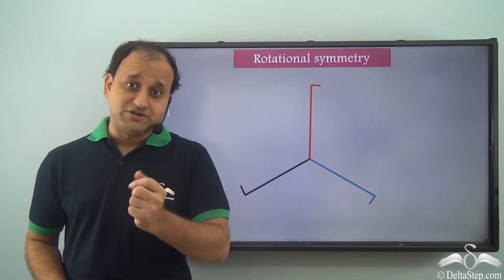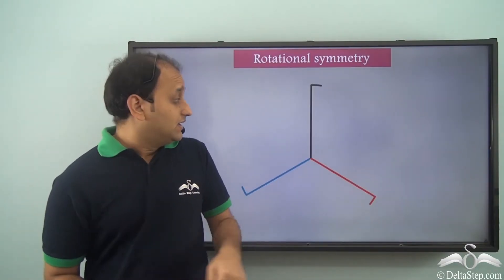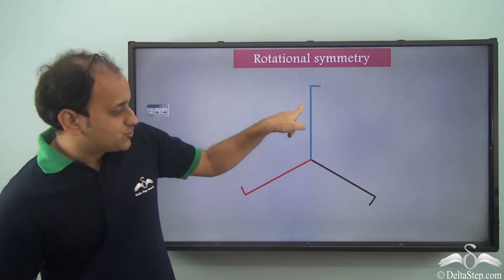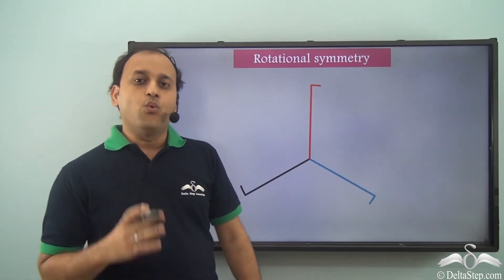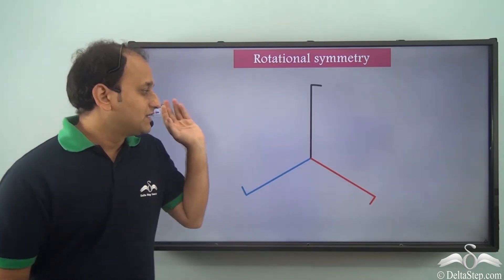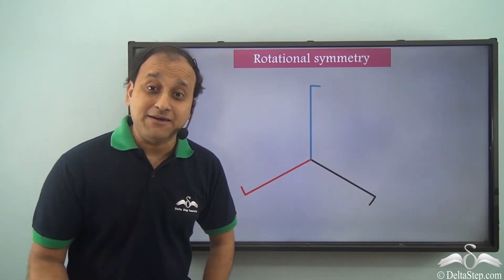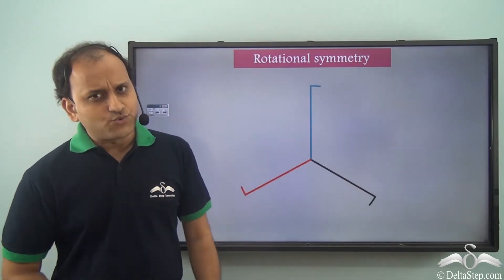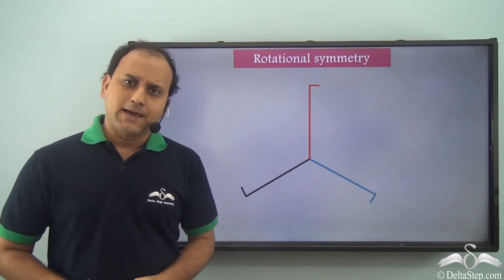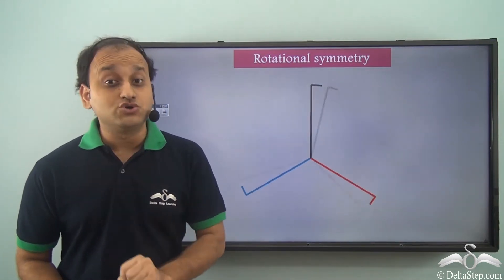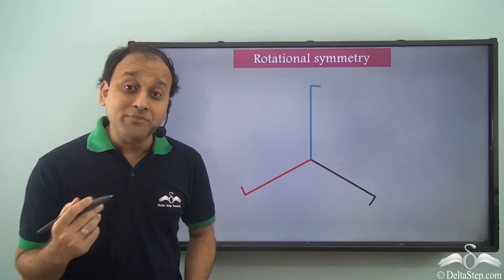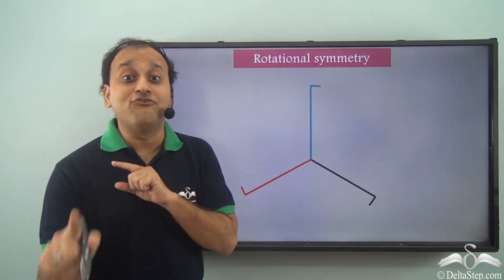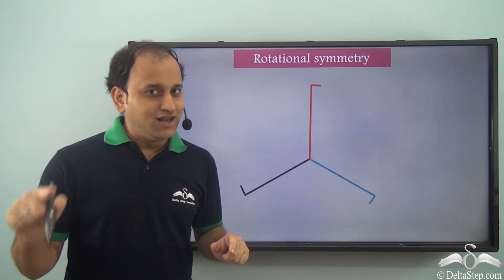We know what rotational symmetry is. For example, in this particular object, we see that when it is rotated, even before completing one full turn, the object looks the same as its initial position a number of times. This is what rotational symmetry is — it is defined by how many times the object looks exactly the same as its initial position before completing one full turn.